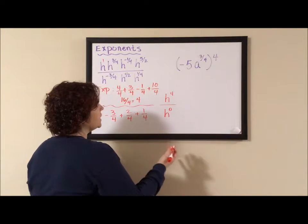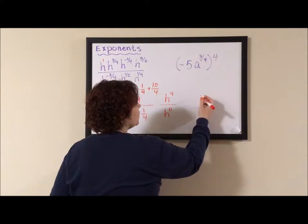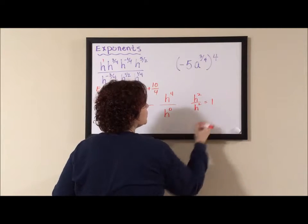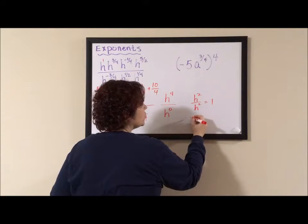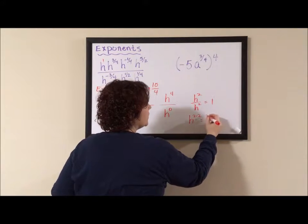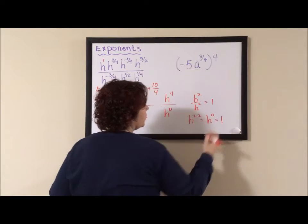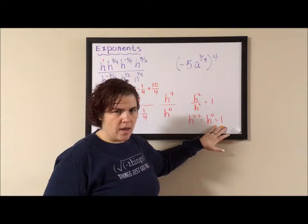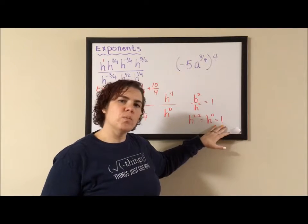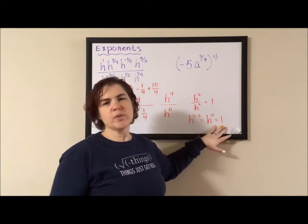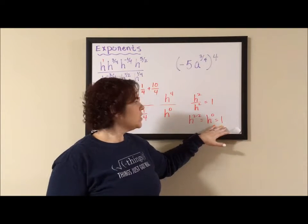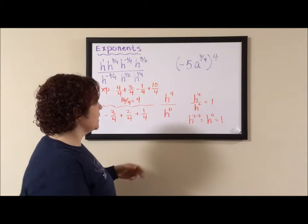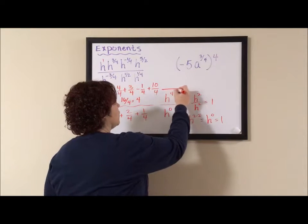The reason that anything to the power of zero is one is because if you think of H squared divided by H squared, we know that equals one. But with this whole subtraction rule, H to the two minus two is equal to H to the zero, which is equal to one. So you can see a zero exponent is basically going back to your multiplicative identity. And the multiplicative identity is one. So anything to the power of zero is one. So this denominator is just one. So my answer is going to be H to the fourth.